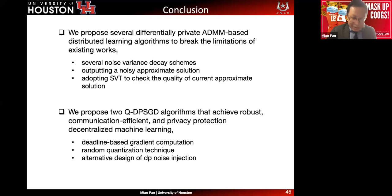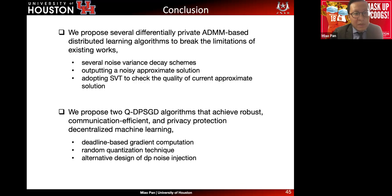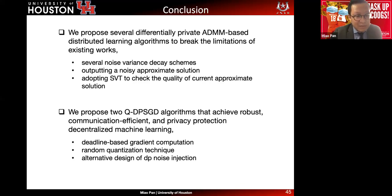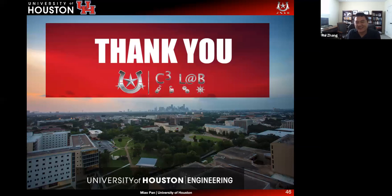In conclusion, we proposed differentially private ADMM for distributed machine learning. Our contributions include: noise decay schemes to reduce negative impacts of noise; noisy approximate solutions to make ADMM feasible without requiring perfect local optimization; SVT adoption to save communication costs and evaluate approximation quality; and two QDPSGD algorithms that achieve robust, communication-efficient, and privacy-preserving decentralized machine learning. Thank you everyone. We have time for questions.